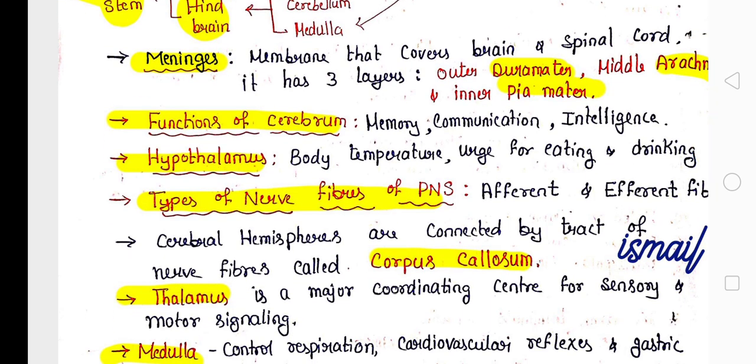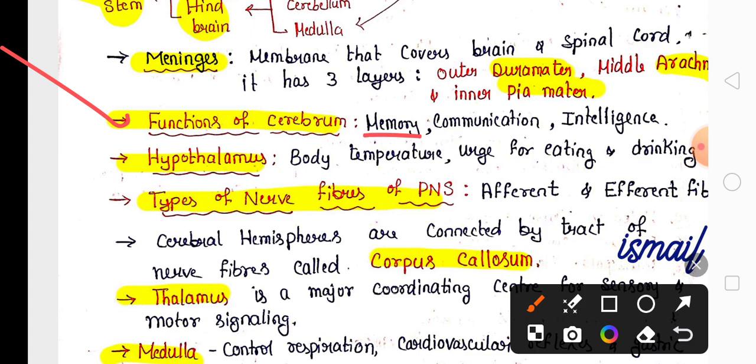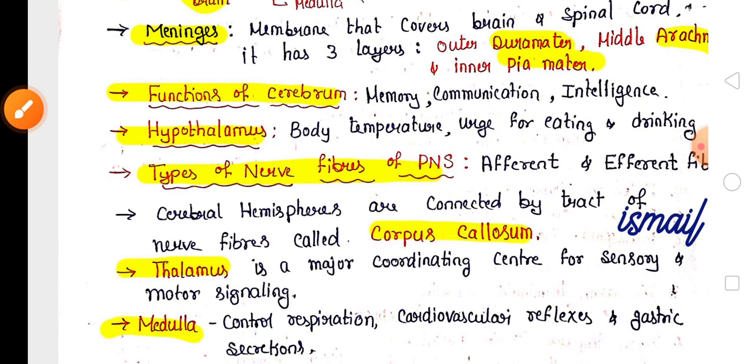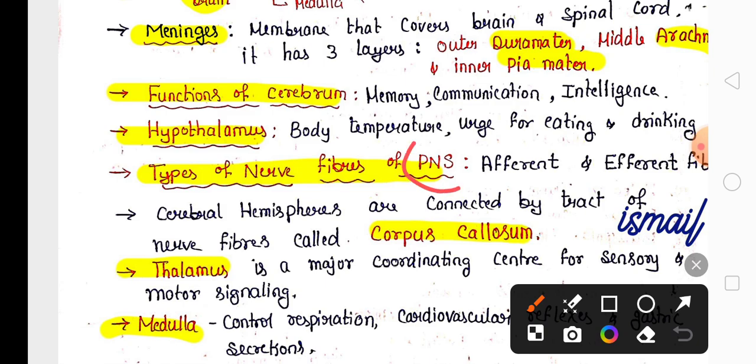Remember functions of Cerebrum: memory, communication, and intelligence. Hypothalamus maintains body temperature and urge for eating and drinking. Remember the types of nerve fibers in the peripheral nervous system: afferent and efferent.